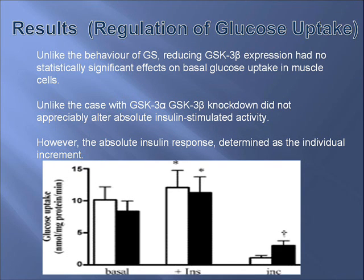The second result is regulation of glucose uptake. Unlike the behavior of glycogen synthesis, reducing GSK3 beta expression had no statistically significant effect on basal glucose uptake in muscle cells. In control cells, acute insulin exposure results in a modest but statistically significant stimulation of uptake. Unlike the case with GSK3 alpha, GSK3 beta knockdown did not appreciably alter absolute insulin-stimulated activity.